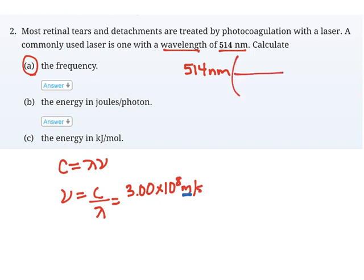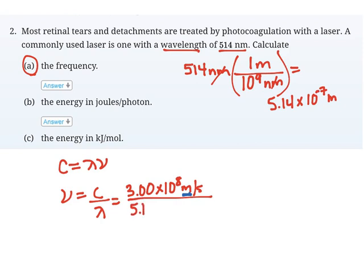So I can look up the conversion between nanometers and meters. It's in your formula sheet as well. There's 10 to the 9 nanometers in 1 meter. Nanometers cancels out. I can solve and I end up getting 5.14 times 10 to the negative 7 meters. So that's what I'm going to plug into my equation.